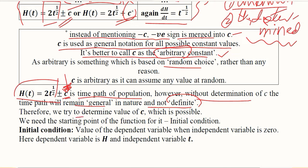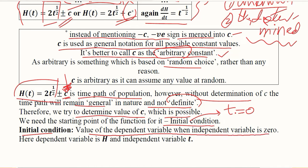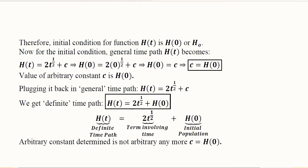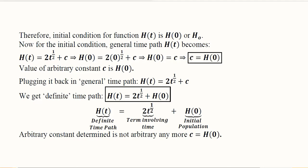We can try to make it definite so that we could plot it and make better interpretations from it. For that, we use an initial condition. As the name suggests, it is something at the beginning — when time has not passed, that is when t equals 0. This initial condition will give rise to the determination of the constant c. The initial condition is the value of the dependent variable when the independent variable is 0. Since the independent variable is t, the value of h at t equals 0 — written as h₀ — is that initial condition.